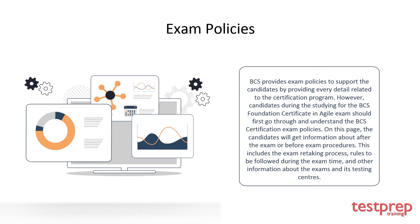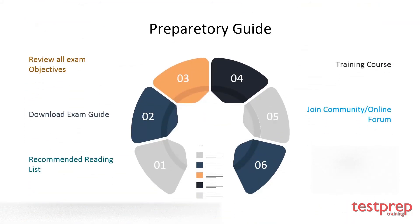For the preparatory guide: first, review all exam objectives and visit the official BCS website for a clear overview. Second, download the course outline — also known as the exam guide — which consists of all the domains and topics of the examination. Third, get started with a training course. Fourth, getting hands-on experience is the most important step for exams like the BCS Foundation Certificate in Agile. Fifth, take practice tests available at testpreptraining.com.